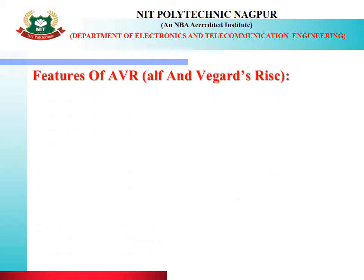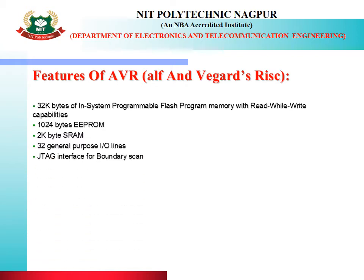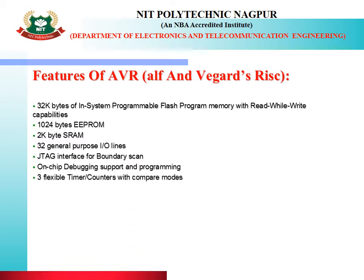Next part is features of AVR. It consists of 32 kilobytes of in-system programmable flash program memory with read-while-write capabilities. It also consists of 1024 bytes of EEPROM and 2 kilobytes of SRAM. It is having 32 general purpose input-output lines. It consists of a JTAG interface for boundary scan, on-chip debugging support and programming. It consists of 3 flexible timers or counters with compare modes. It is having internal and external interrupts, and a serial programmable USART, i.e., universal synchronous or asynchronous receiver transmitter.